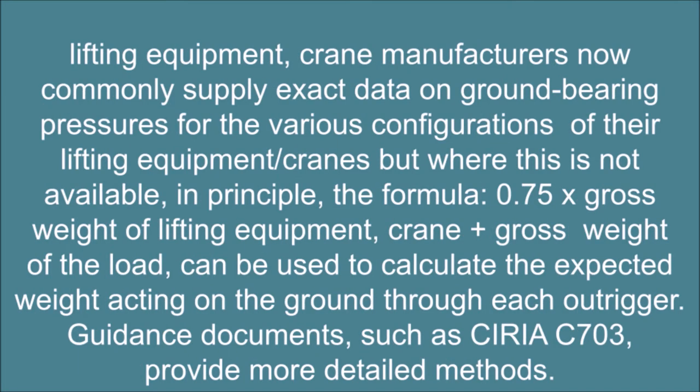Crane manufacturers now commonly supply exact data on ground bearing pressures for various configurations, but where this is not available, in principle the formula — 0.75 multiplied by gross weight of crane plus gross weight of the load — can be used to calculate the expected weight acting on the ground through each outrigger. Guidance documents such as SG4 C703 provide more detailed methods.